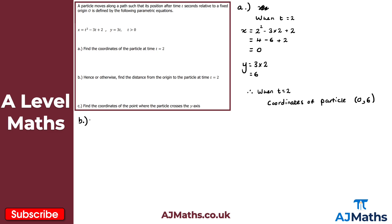For part b, it says 'hence find the distance from the origin to the particle at time t equals 2.' The word 'hence' suggests we use our answer from part a. The coordinates of the particle at t equals 2 are (0, 6), so we're looking for the distance from the origin to this point — which is simply an application of Pythagoras.